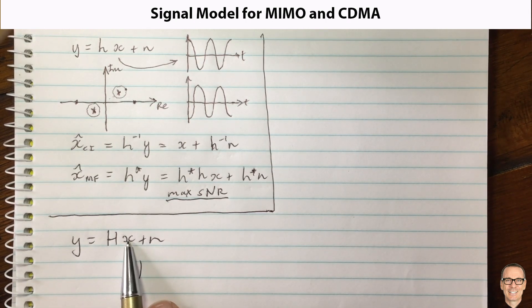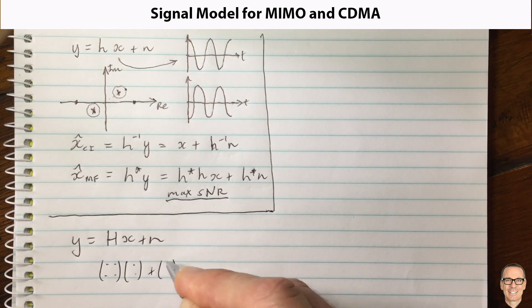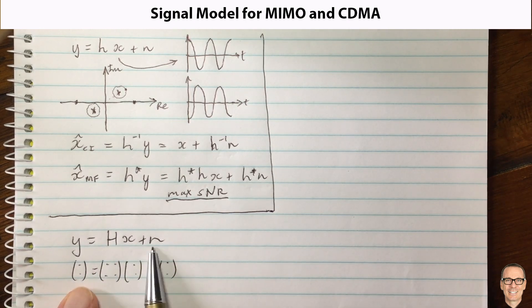Let's consider the case where there's two elements in this vector. Then H is going to have four elements, n is going to have two elements, and y is going to have two elements. So this is what we're going to be considering now.